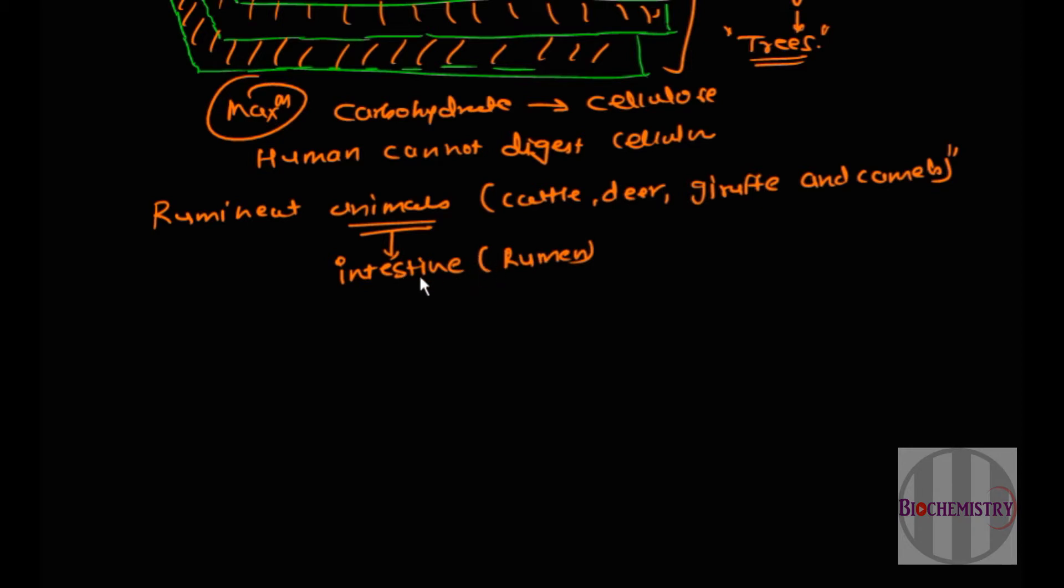Their intestine has one part which is known as rumen. This intestinal rumen contains one type of bacteria which secretes cellulase enzyme, and because of this bacterial secreted cellulase enzyme, these ruminant animals are able to digest cellulose.